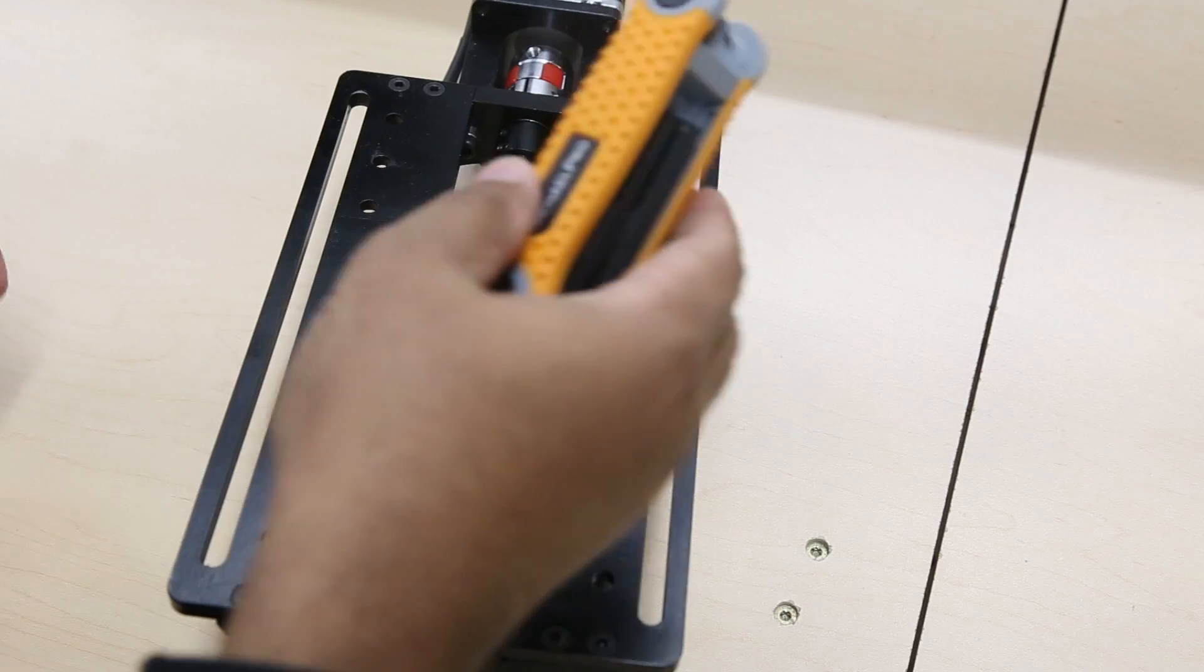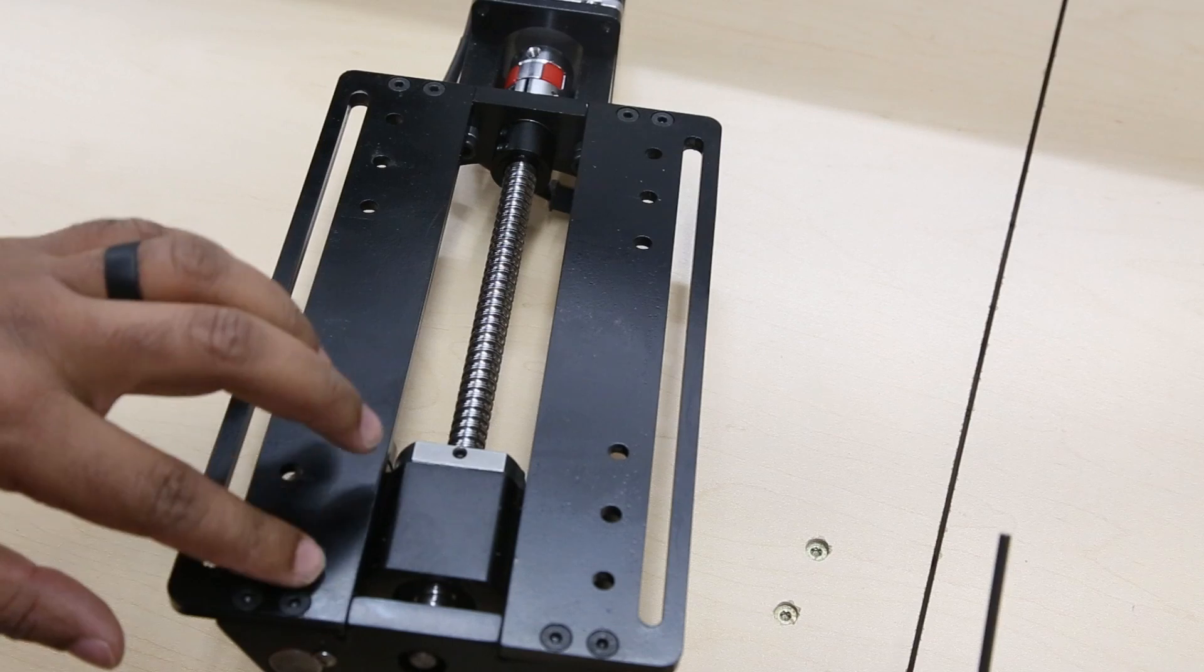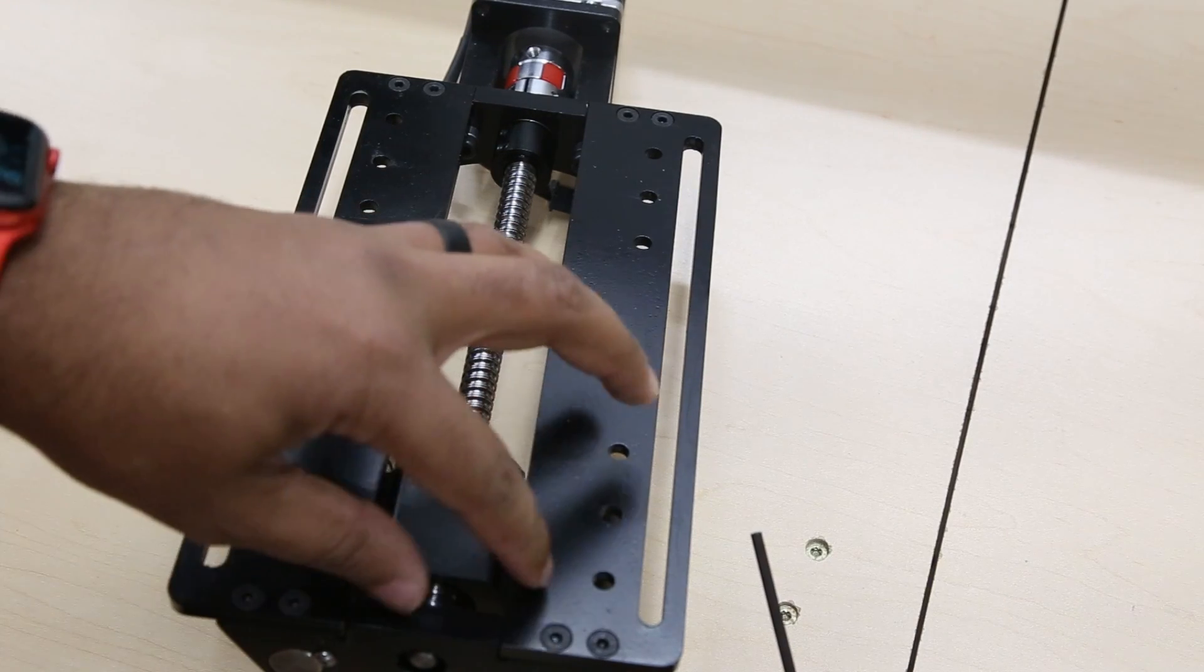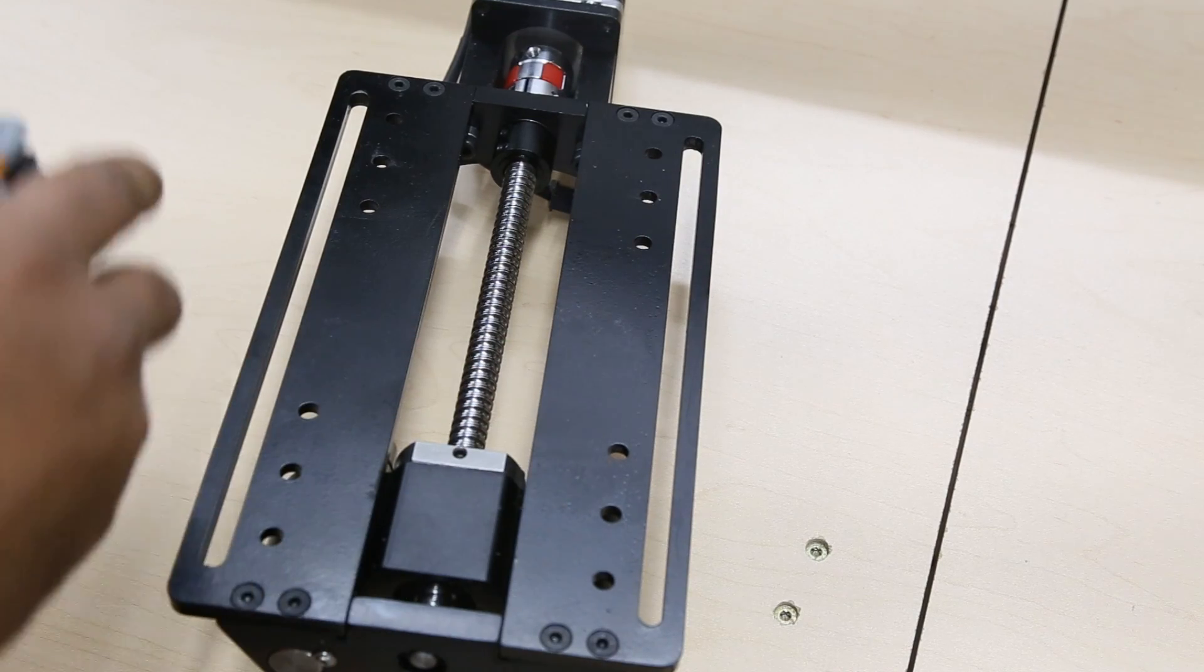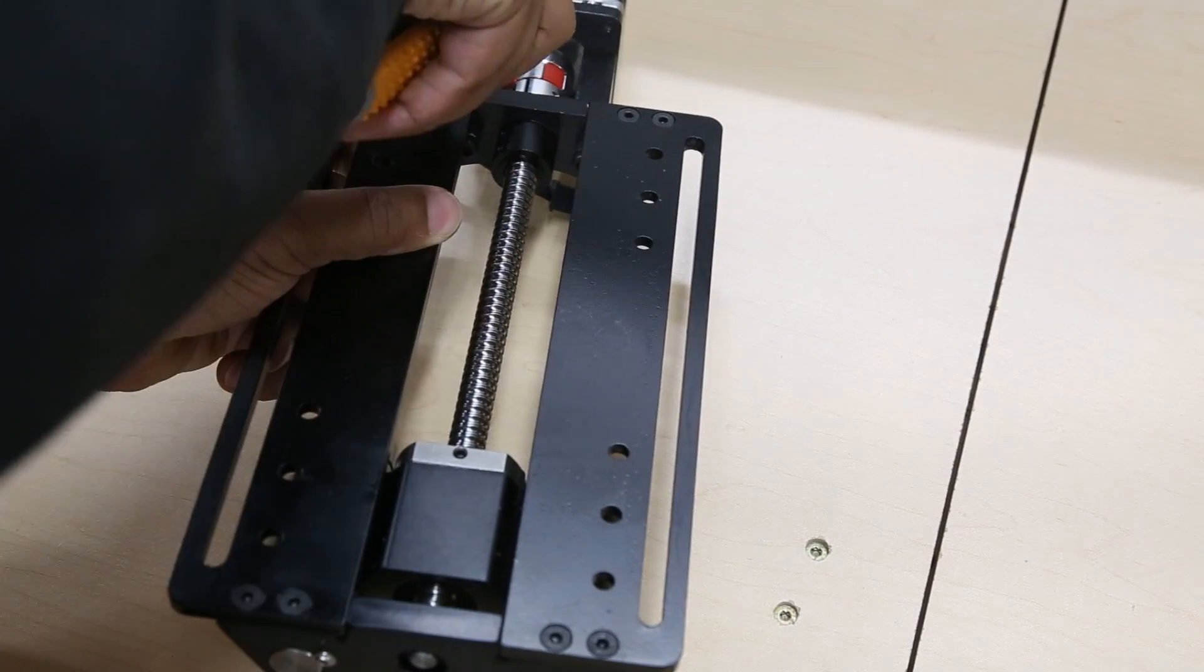Alright, so I'm using a 2.5mm hex key. Make sure you get the right size hex key because these are in there fairly tight and secure. So you just want to make sure you don't have anything that will strip it.